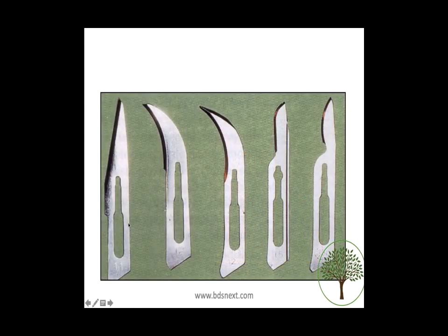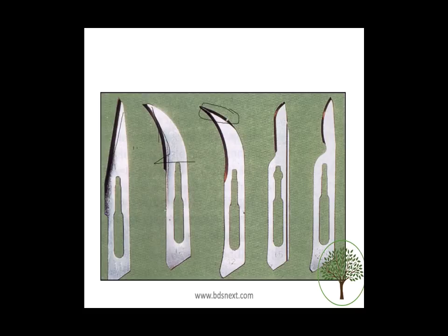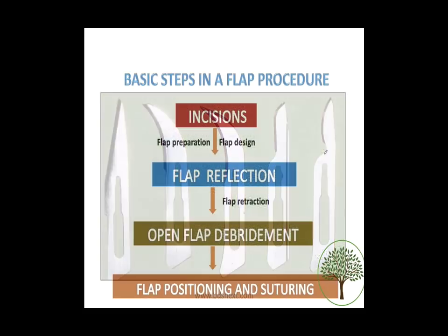Let's quickly identify these blades. The blade that looks like a 1 is the number 11 blade. The blade that looks like a 2 is the number 12 blade. Number 12 and 12D look similar, but 12D has cutting edges both on the front and back, whereas number 12 cuts only on one side. Both are called 12 because both look like a 2. Number 15 is the typical blade, and 15C is the same with a tiny C-shaped portion cut out.